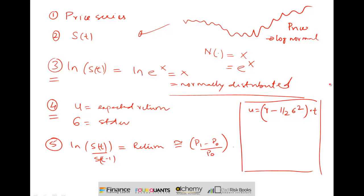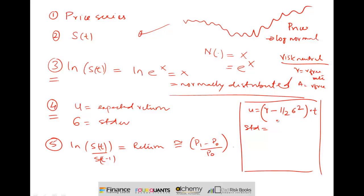Why r minus half sigma squared? If you go back to the basics of the Black-Scholes model, you'd remember that a Black-Scholes world assumes from the beginning that you're operating in a risk-neutral world, where all investors are happy earning the risk-free rate, and therefore all assets earn the risk-free rate. So in this distribution the expected return is not mu or r, but r minus half sigma squared, proportionate to time. The standard deviation is also proportionate to time — specifically sigma times the square root of t.